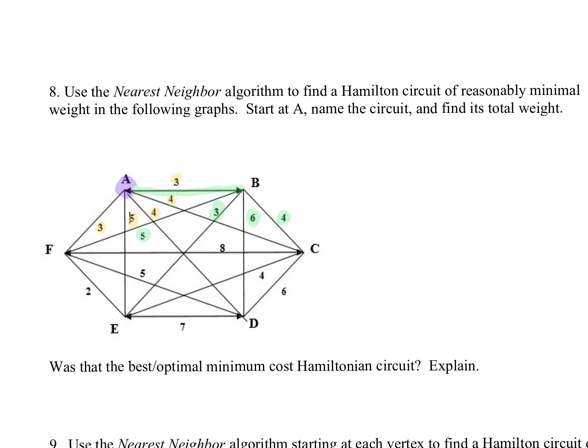That's the way I'm going to read it. So I'm at B. My choices are this five, this three, this six, this four. I'm going to take this three that takes me down to E.